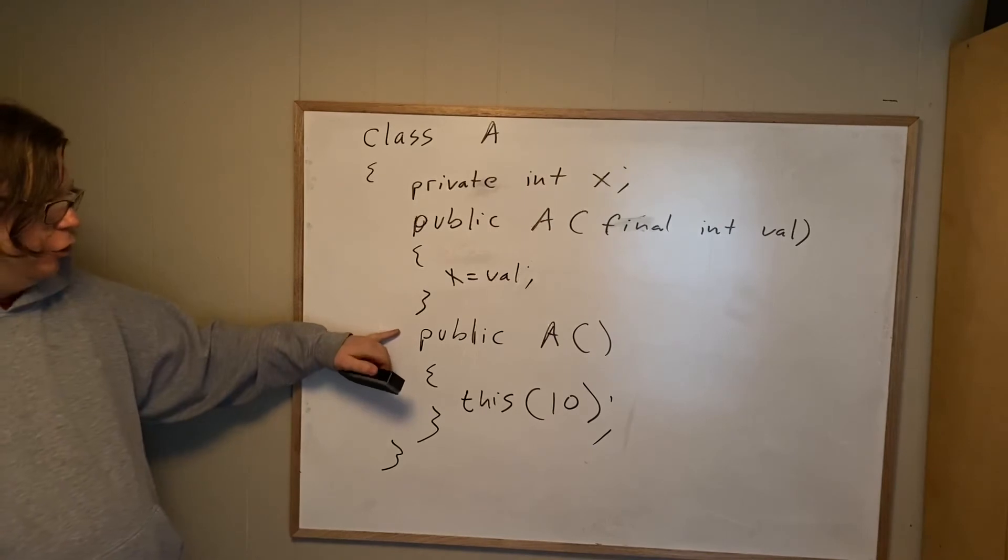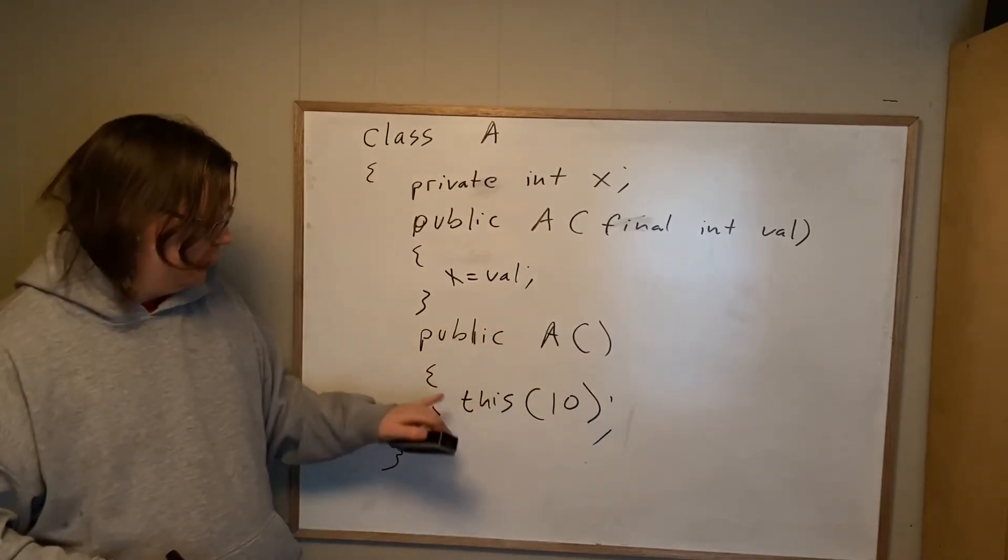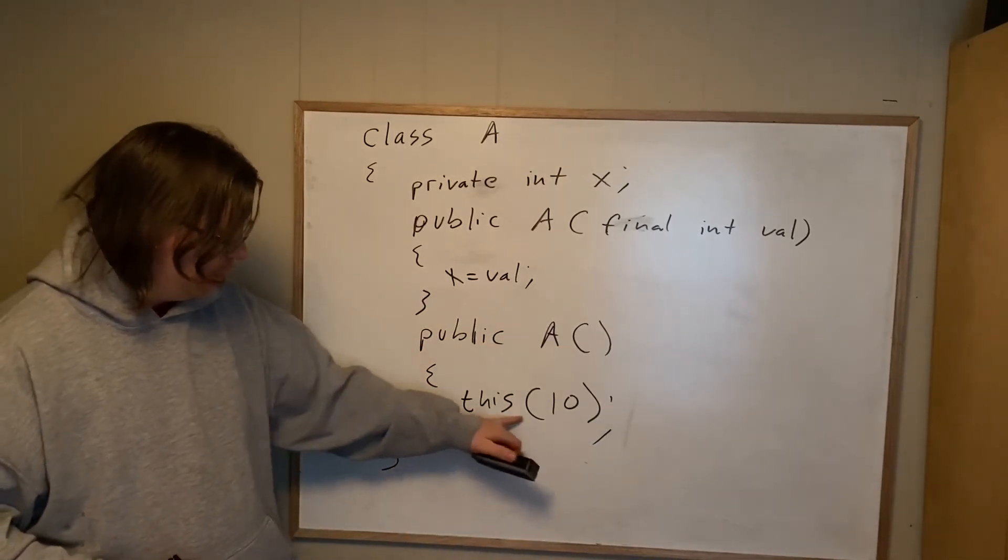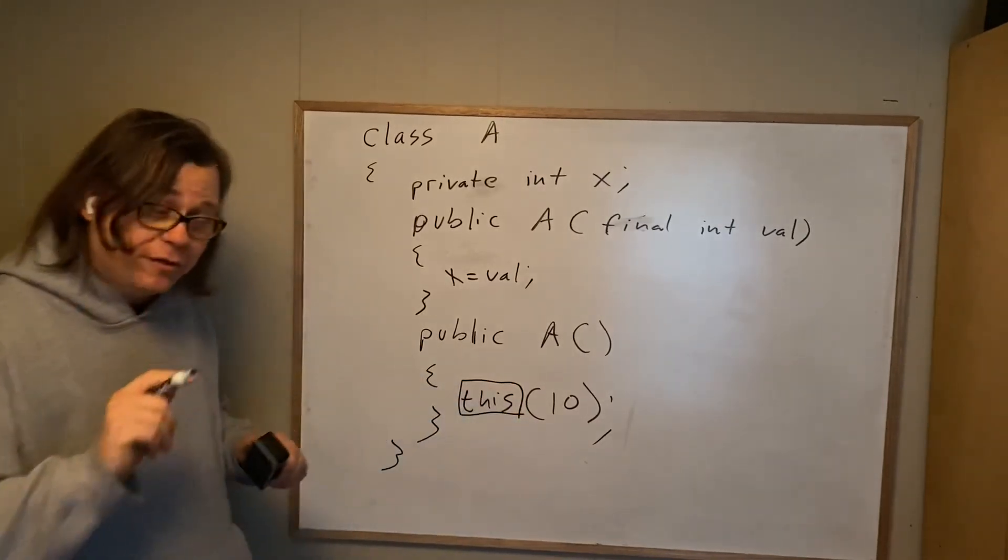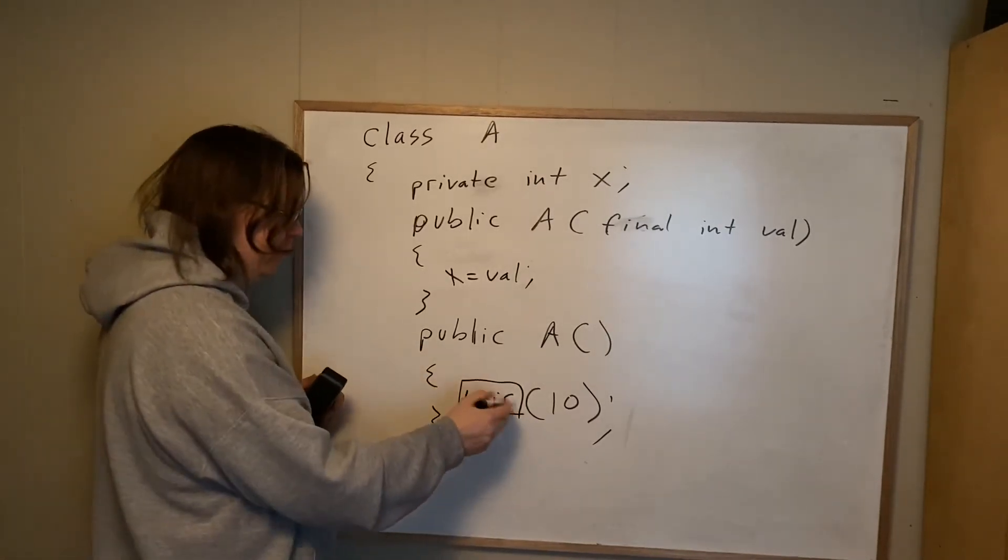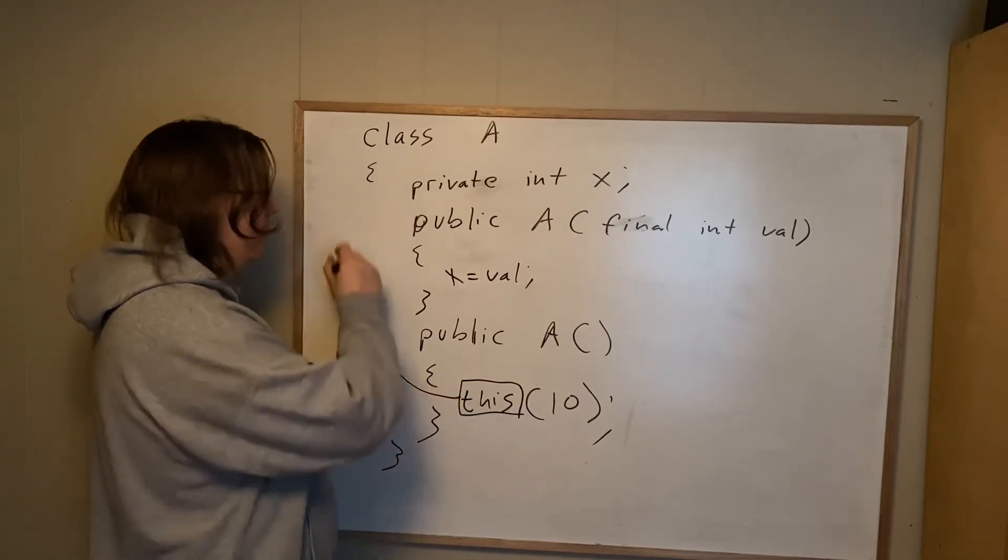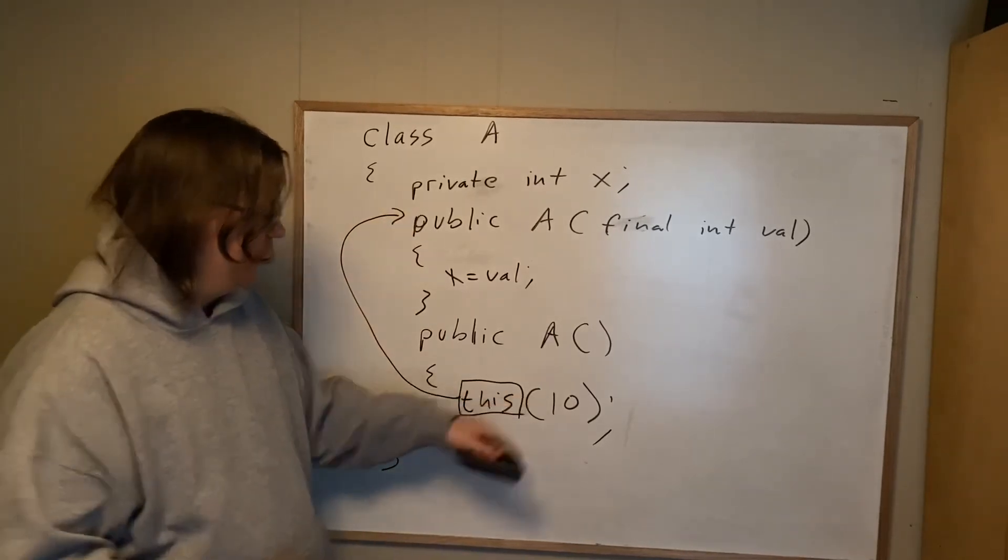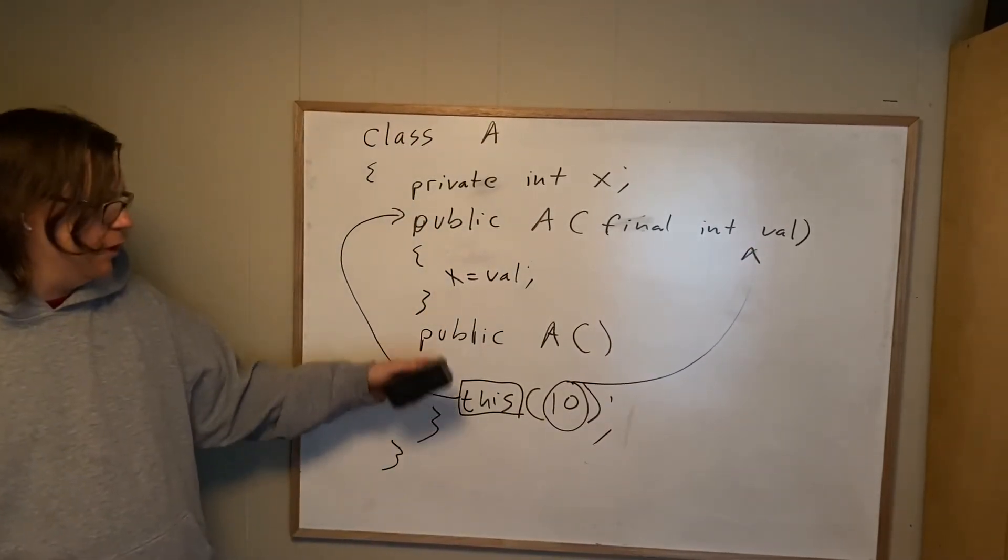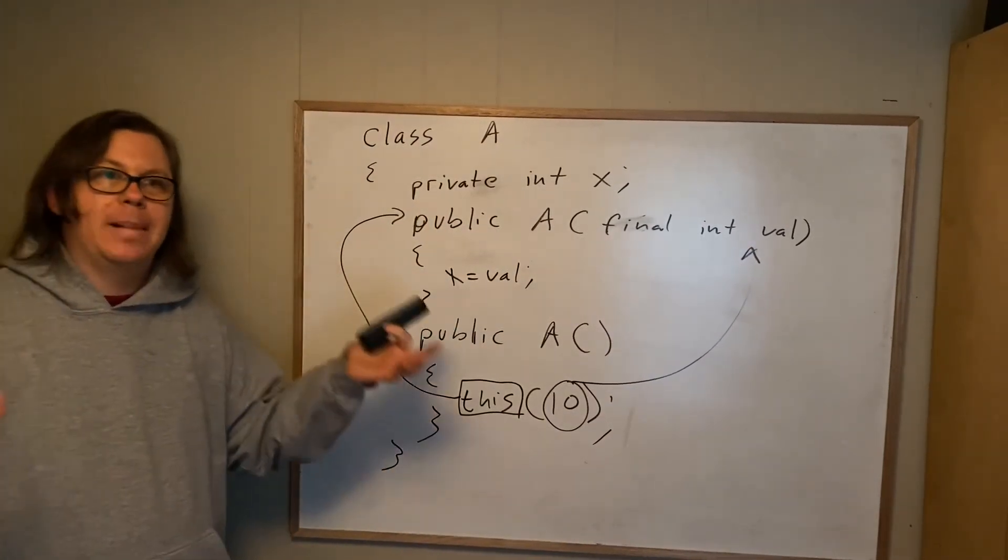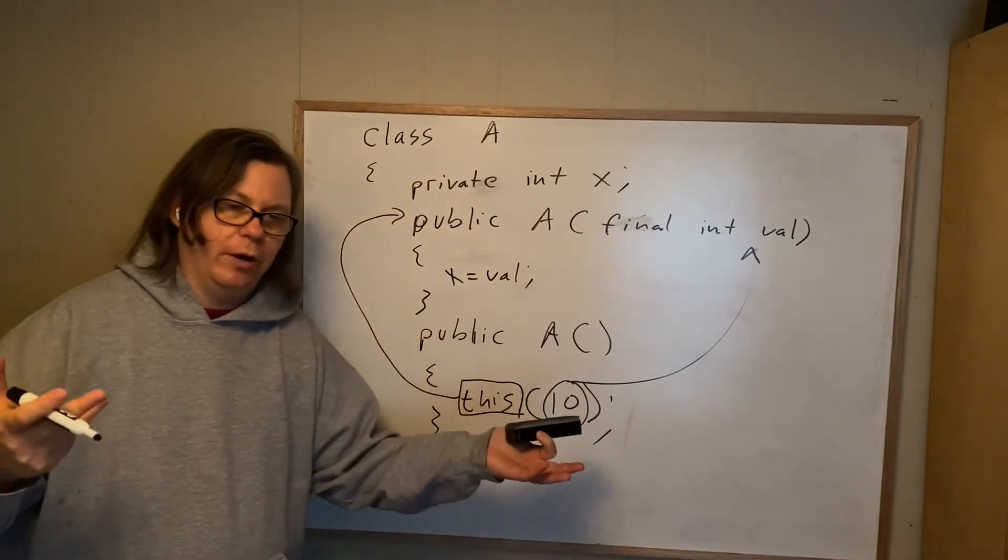So now when you call new A with no parameters, it's going to call this constructor. It's going to call this, which is different than polymorphism in this case. It's not this dot, it's just this, which means call the constructor here, passing in the value 10. So by default, we're going to give x a value of 10. But if you want to give it a value like 11, go for it, right?